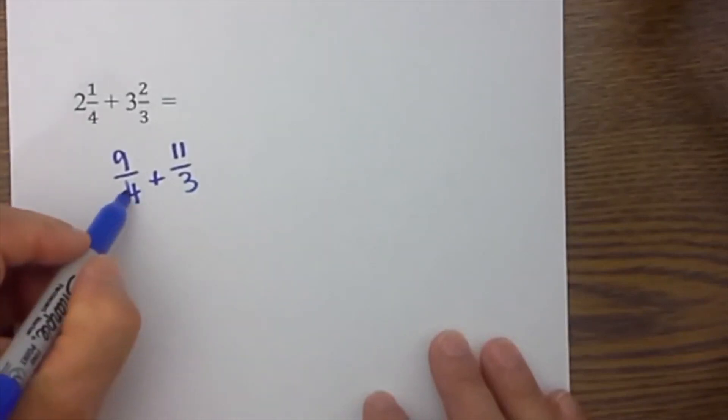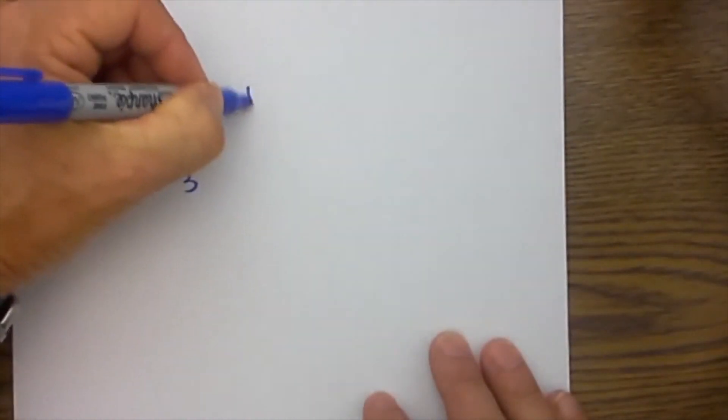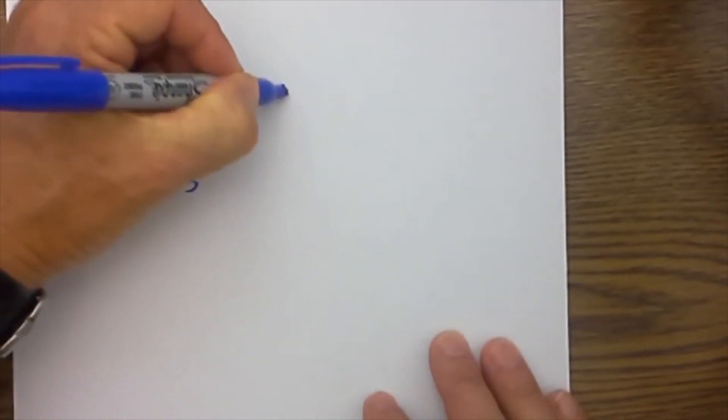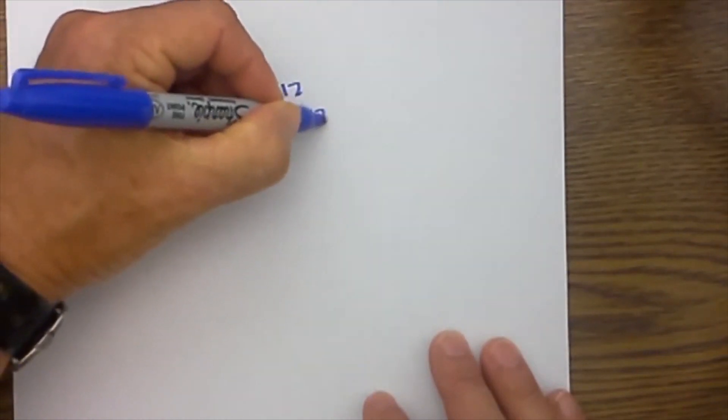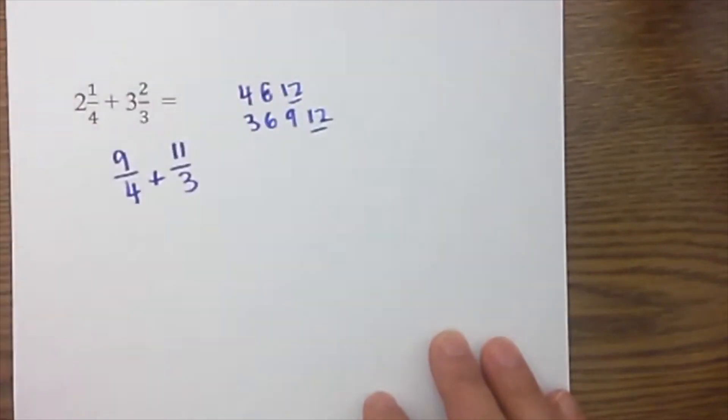I now just add them, and I need to find a common denominator. So we have 4, 8, 12, and 3, 6, 9, 12. So 12 is the lowest common denominator.